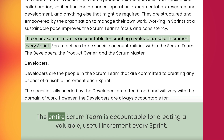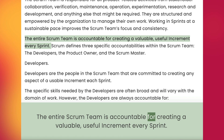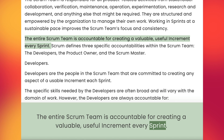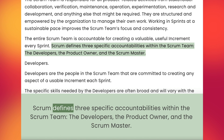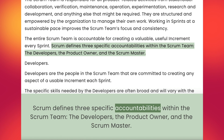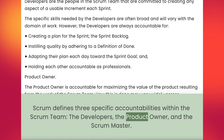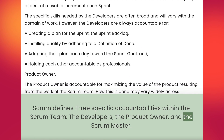The entire Scrum team is accountable for creating a valuable, useful increment every sprint. Scrum defines three specific accountabilities within the Scrum team: the developers, the product owner, and the Scrum master.